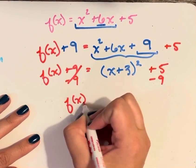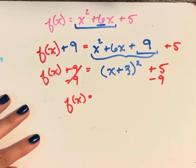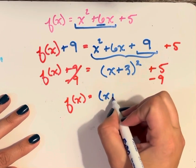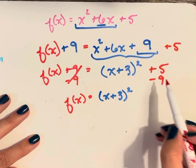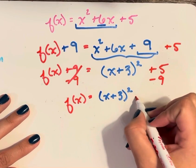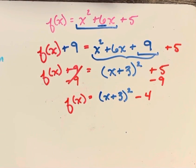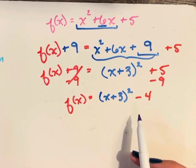Now I'll have f of x equals x plus 3 squared, 5 minus 9 is negative 4. Now we have our function in vertex form.